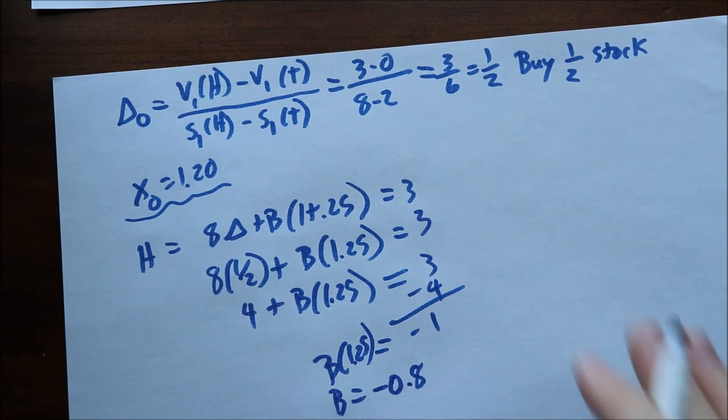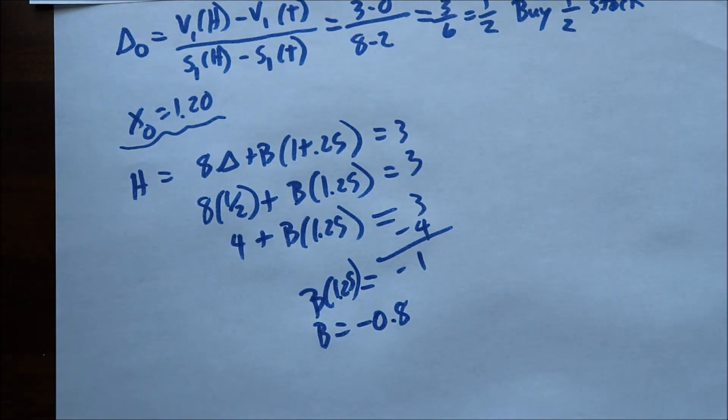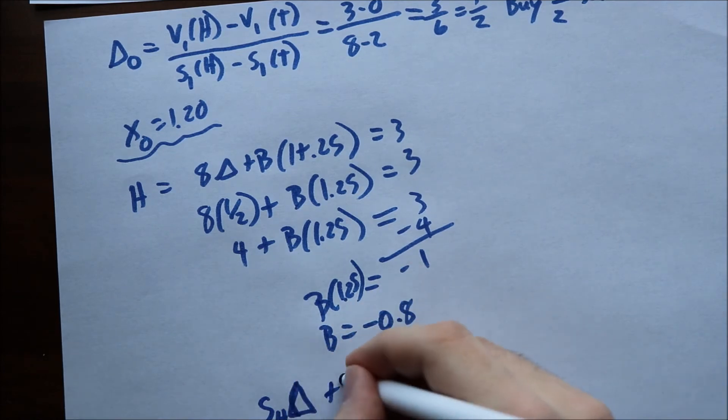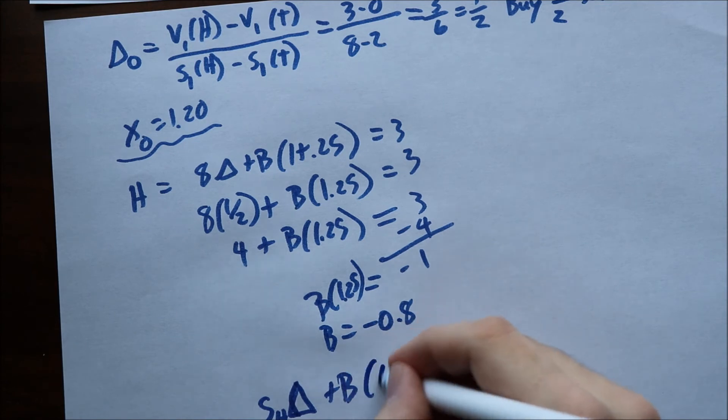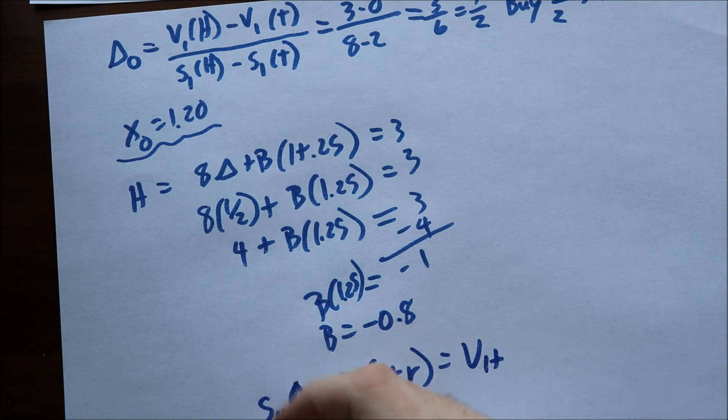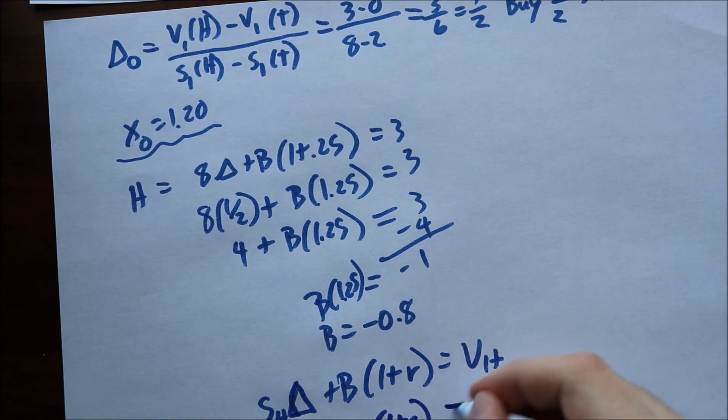Again, we can go back through the same process of plugging them in to the formula, which is you have your stock price for heads times delta here plus what you borrowed times 1 plus R. And this should be your value at heads. And also you have S of T delta plus what you borrowed 1 plus R into the future value of T.